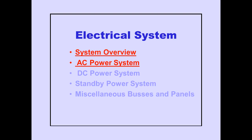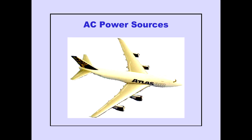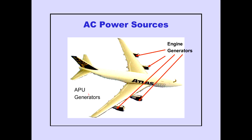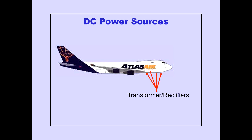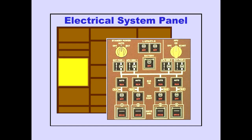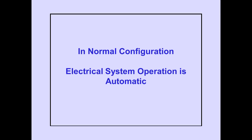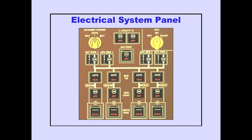Electrical power systems will be presented in two parts. In part one, we will cover system overview and AC power system. Four engine-driven generators provide AC power. Two APU generators and two external power receptacles are also available to provide AC power on the ground. DC power is provided from four transformer rectifiers. An APU battery and a main battery provide backup power to selected DC-powered components. The electrical system panel is located on the overhead panel. In normal configuration, electrical system operation is automatic. Basic AC electrical power distribution is shown schematically on the electrical system panel.